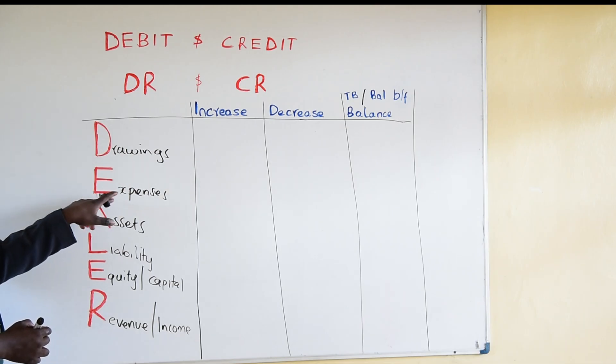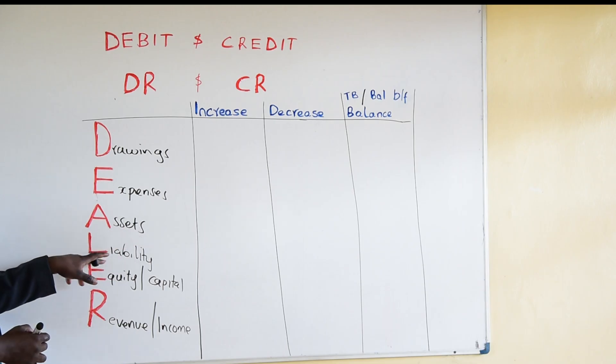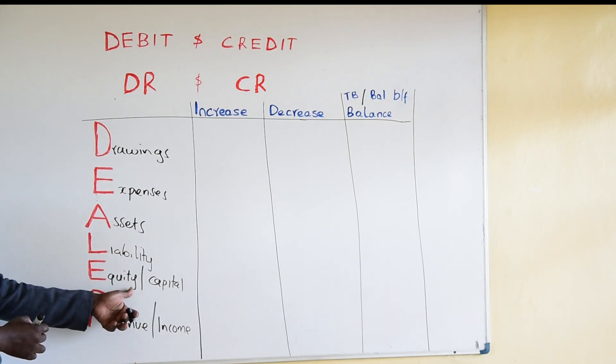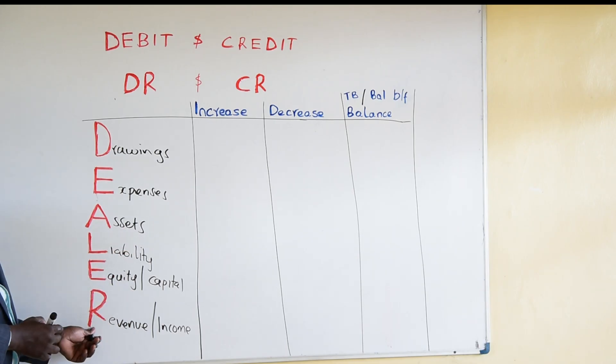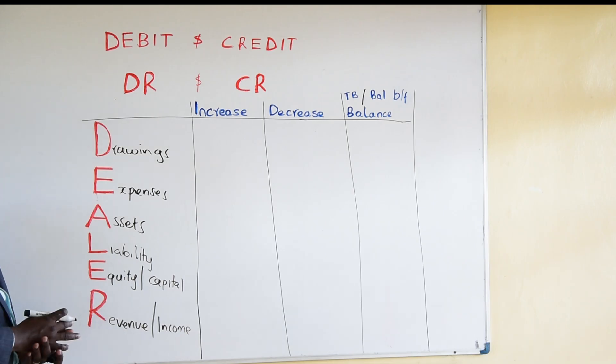So to recap: D for drawings, E for expenses, A for assets, L for liability, E for equity, R for revenue — or what we call income.